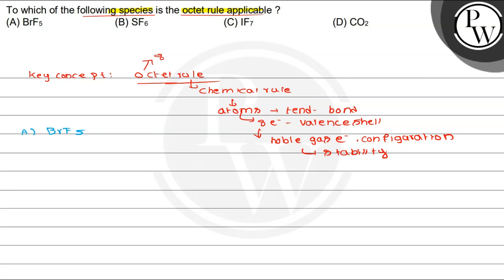For BrF5, when we look at the structure, the electrons around bromine count up to 12 — that means more than the octet. The fluorine atoms, however, each have 8 electrons and obey the octet rule. But bromine has 12 electrons, so it does not obey the octet rule. Therefore, the molecule BrF5 does not obey the octet rule.